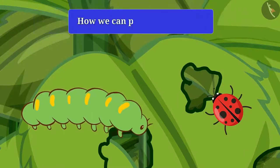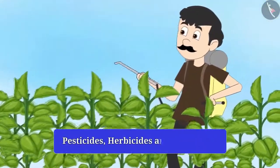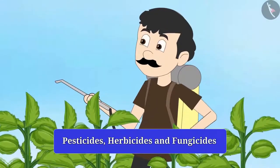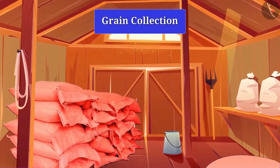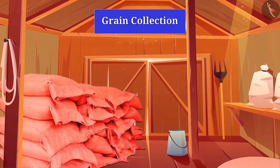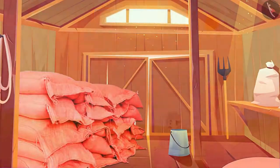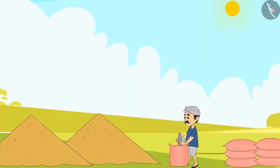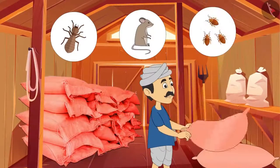Do you know how we can protect the crops from them? By spraying chemicals such as pesticides, herbicides and fungicides. Friends, if the crop is not stored properly after harvesting, it also destroys the crop. Therefore, grains should be stored properly. The grains can be stored by spraying chemicals and drying them in sunlight before storing, which keeps away all insects, mice and microorganisms.